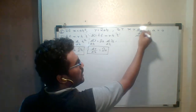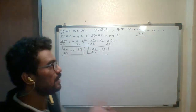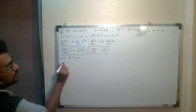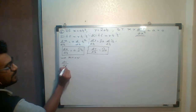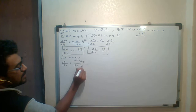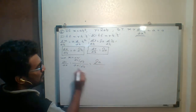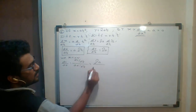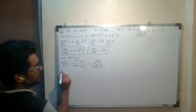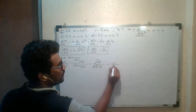Now, for d²y/dx², we first need dy/dx. We apply the formula: dy/dx equals dy/dt divided by dx/dt. dy/dt is 2a, and dx/dt is 2at. So 2a and 2a cancel, and the remaining term of dy/dx is 1/t.